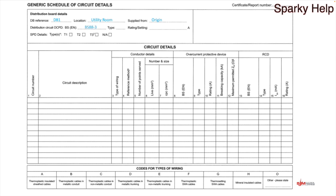Next: what overcurrent protective device? That's what OCPD stands for. So what fuse or circuit breaker is protecting this board? If this is the origin then I'm going to go for a BS88-3. It could be a BS1361 or anything else. But remember, if it fed another distribution board from a previous distribution board, it might just be a circuit breaker or a fuse. What type is it — that's the protective device that protects that particular board. So this is the origin — let's go for 100 amp.